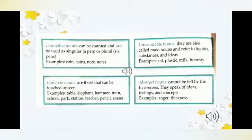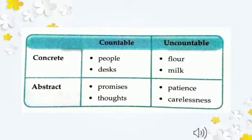Abstract nouns cannot be felt by the five senses — eyes, nose, ears, tongue, and touch. Things we cannot touch are abstract. Examples: anger (غصہ), thickness (چوڑائی) — we can only feel them, not see or touch them. So the kinds we have covered so far: countable nouns (those we can count), uncountable (those we cannot count), concrete (those we can see and touch), and abstract.